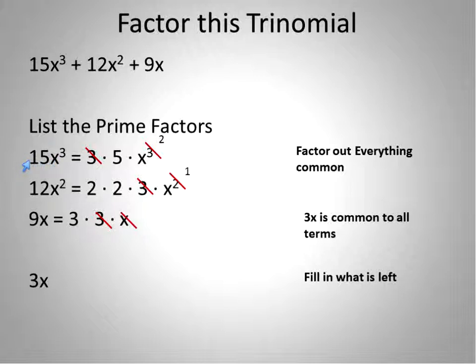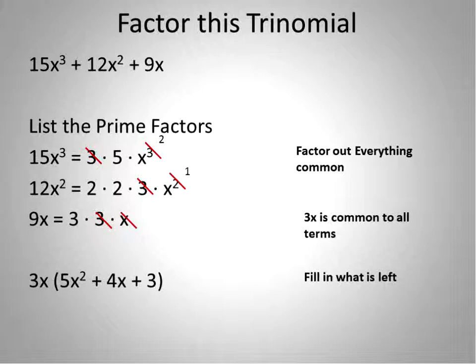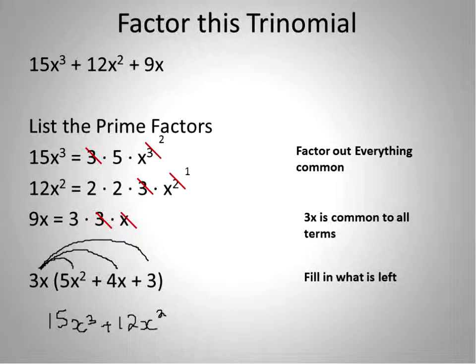What's left of 15x to the power of 3 when we divide by 3x? We have 5 and x to the power of 2, giving us 5x squared. Then 12x squared divided by 3x leaves us with 4x. And 9x, when we take out 3x, leaves us with 3. To check this work, use the distributive property: 3x times 5x squared gives us 15x to the power of 3; 3x times 4x gives us 12x squared; and 3x times 3 gives us 9x. You know you've done it correctly if the resulting trinomial is exactly the same as what you started with.